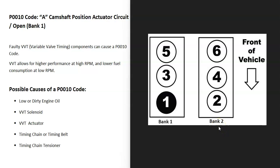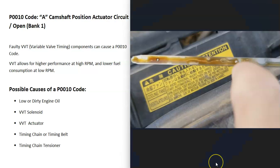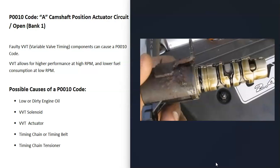The first thing to check for a P0010 code is your oil. Make sure it's not really low or really dirty, because oil flows through the variable valve timing components. If it's really low or really dirty, it can cause issues with those components. So the first thing to do is check your engine oil level.